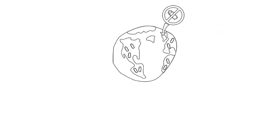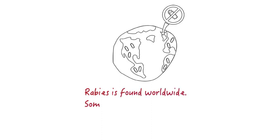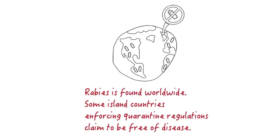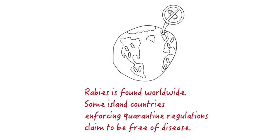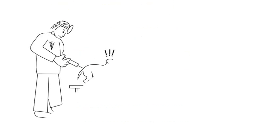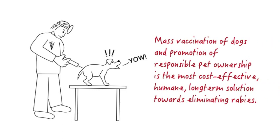Rabies is found throughout the world, but a few island countries like the United Kingdom have enforced rigorous quarantine regulations for mammals and claim to be free of the disease. Mass vaccination of dogs and promotion of responsible pet ownership has the greatest potential for cost-effective long-term eradication of rabies.